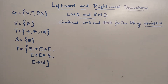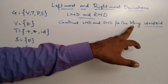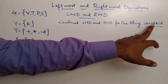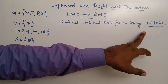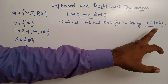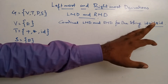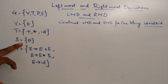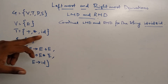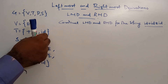So questions are there. Construct leftmost derivation and rightmost derivation for the string ID plus ID star ID. This is the string. So here we call the grammar G equals to V, T, P, S — variable, whatever variable is E. Terminals are plus, star, and ID.